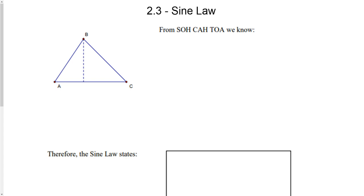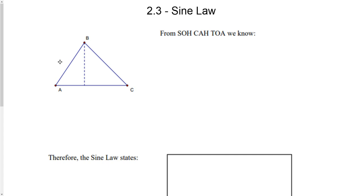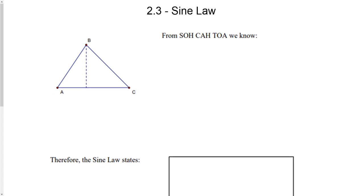Sine Law works well for any non-90-degree triangle. If it's a 90-degree triangle, you can still use SOHCAHTOA — sine is opposite over hypotenuse, cosine is adjacent over hypotenuse, tangent is opposite over adjacent — which we talked about in section 2.2 when we were working with trig values. With triangles, they always label the angles in uppercase letters and then label the opposite side with the lowercase.